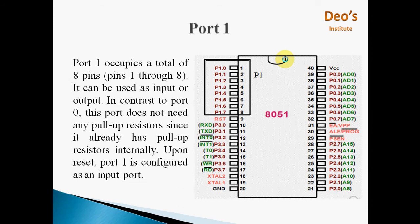Next is port 1. Port 1 occupies total 8 pins from pin number 1 to pin number 8. It can be used as input or output. But unlike port 0, this port does not need any pull-up resistor since it already has pull-up resistors internally. Upon reset, port 1 is configured as an input port.